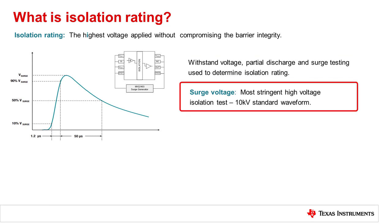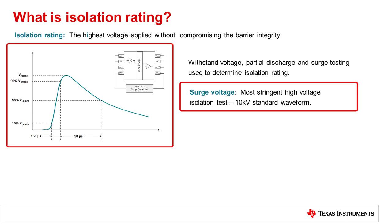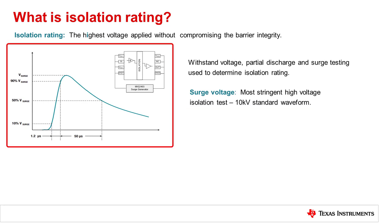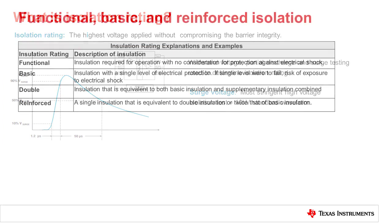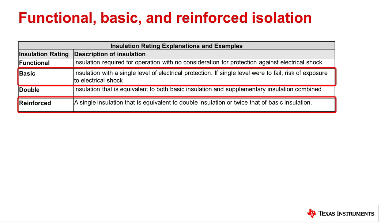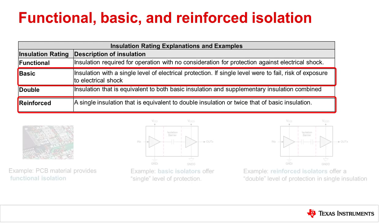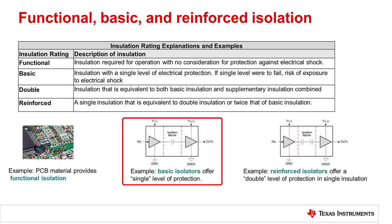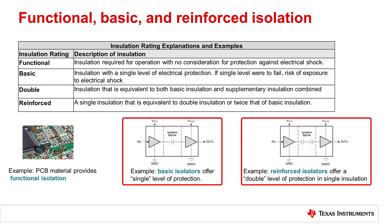Surge testing is the most stringent of these isolation tests, where a 10 kV predefined surge pulse waveform is applied directly to the component. The terms functional, basic, and reinforced are common terms used to describe the categories of isolation voltage ratings. For isolation components, the ratings of basic and reinforced are most frequently used and describe whether a device offers single protection or the equivalent of double protection.